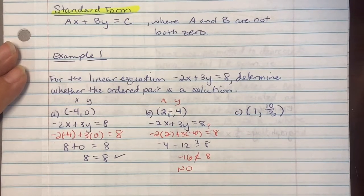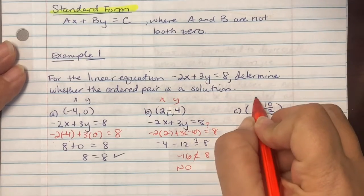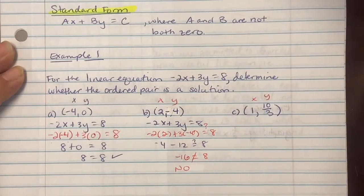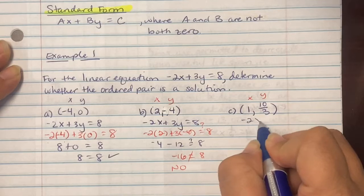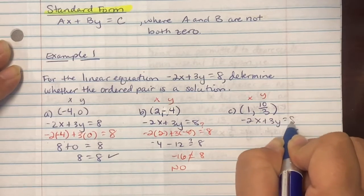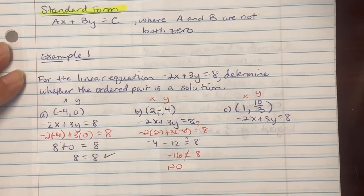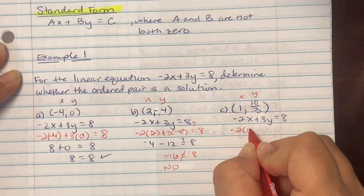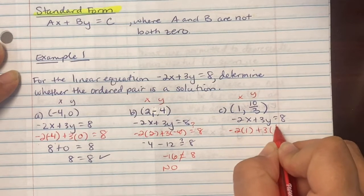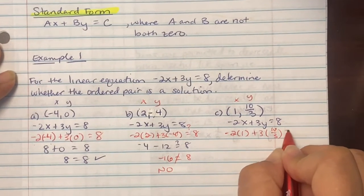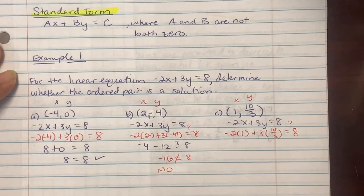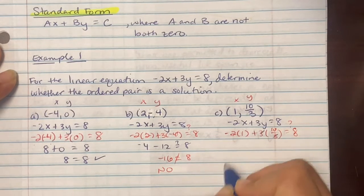So on c you're doing the same thing, only now we're involved with fractions. Again, label it x and y. Start out with writing your equation, -2x + 3y equaling 8. And we're now going to replace x's and y's again. So it's -2 times a positive 1, 3 times 10/3 as a fraction equaling 8. And the reason you're going to leave it as a fraction 10/3 as to not make it 3.3 repeating is because by doing so, leaving it as a fraction, the 3s can cancel each other out.